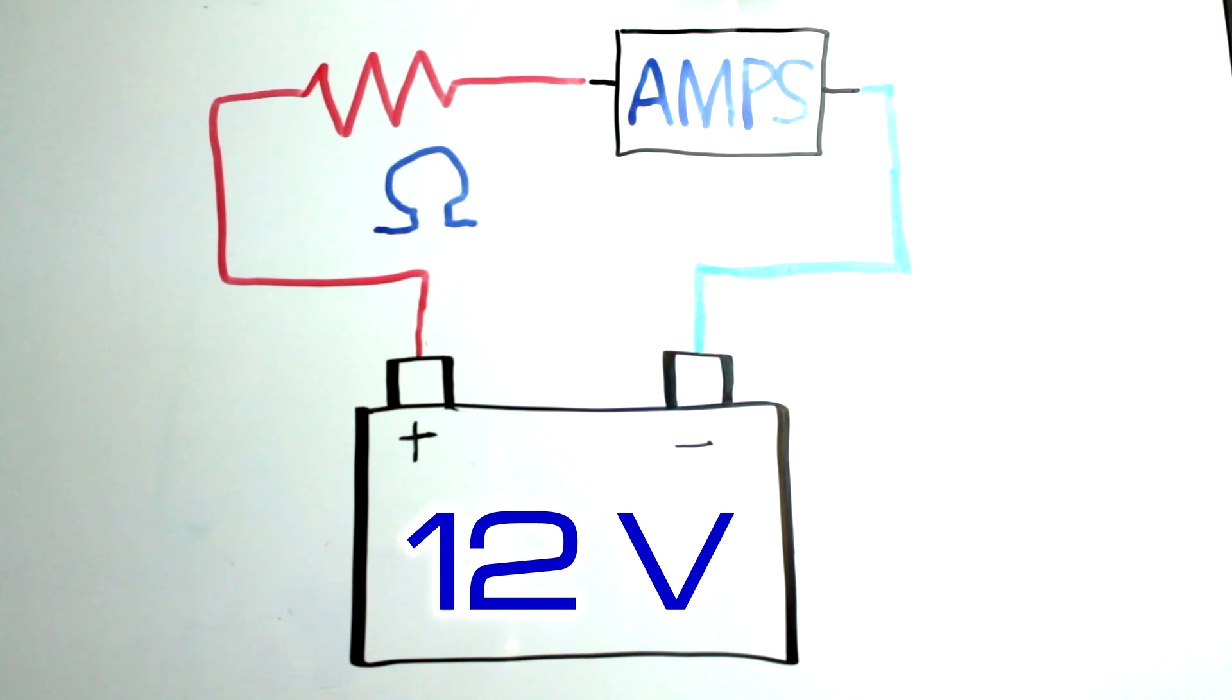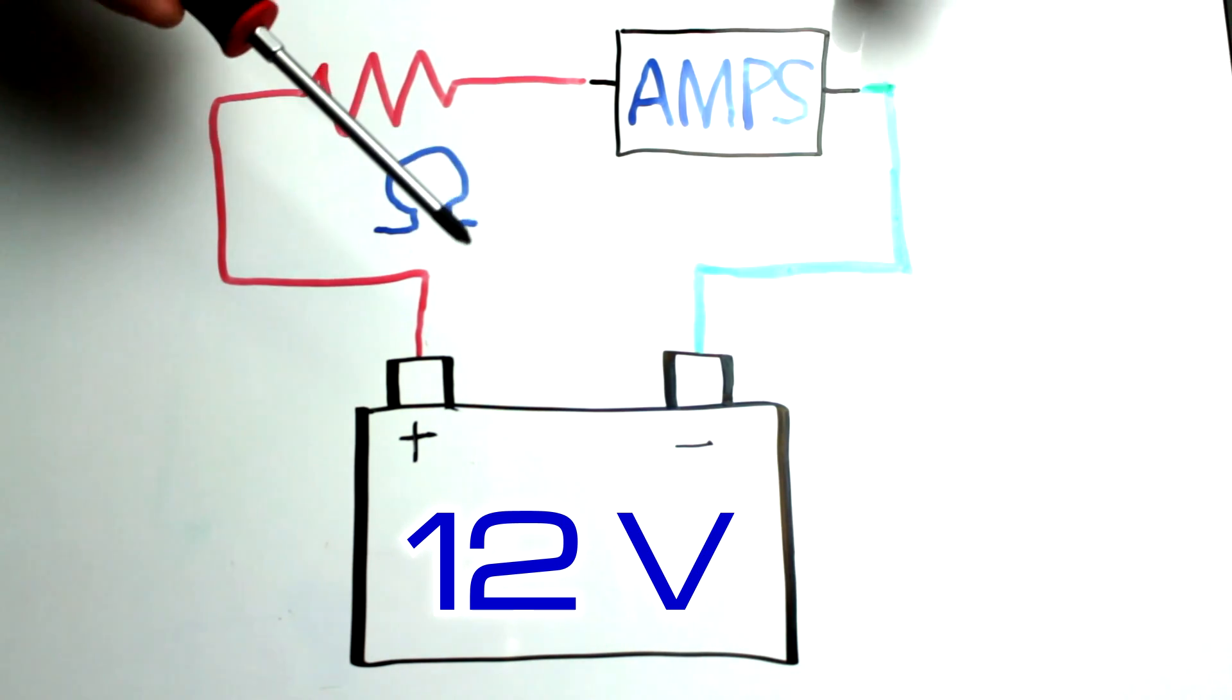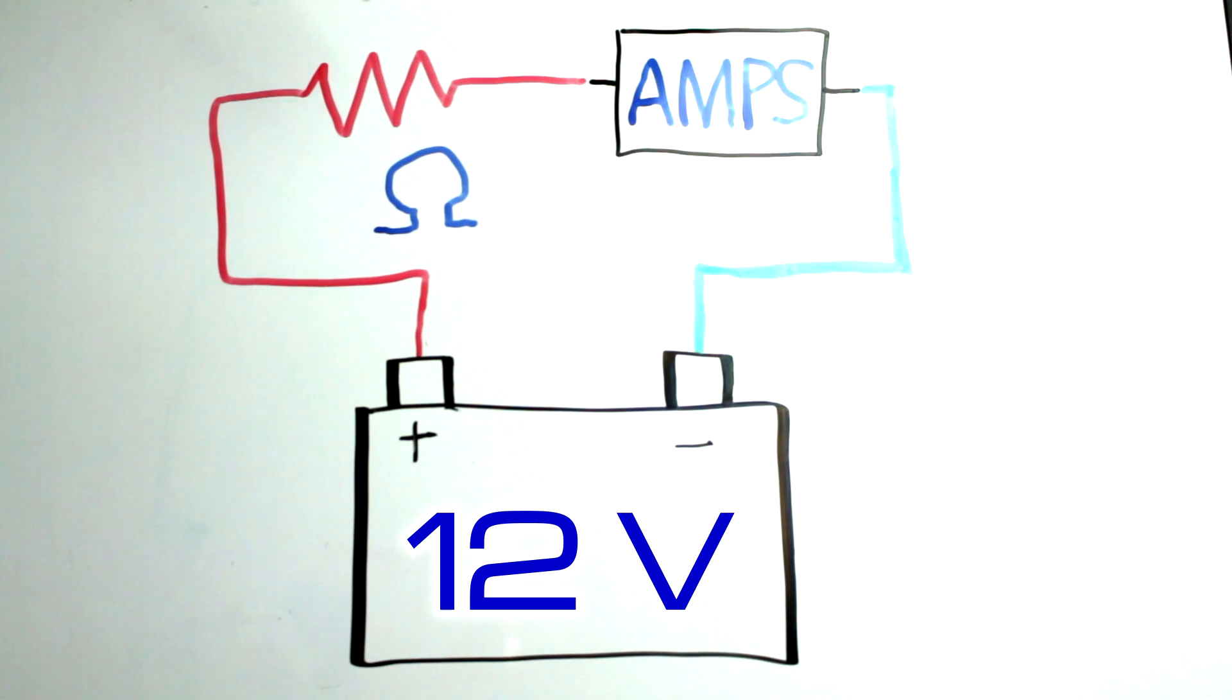Amperage is the flow rate of electricity. No matter where you measure it amperage is going to be the same throughout the entire circuit. That changes a little bit when we start working with parallel circuits but we're going to ignore that for now and keep it as basic as possible for this example. This box is just here to tell us the amperage and it's not gonna mess with the circuit in any way.